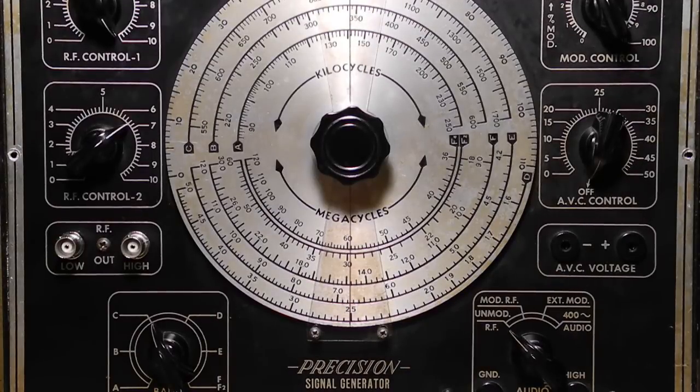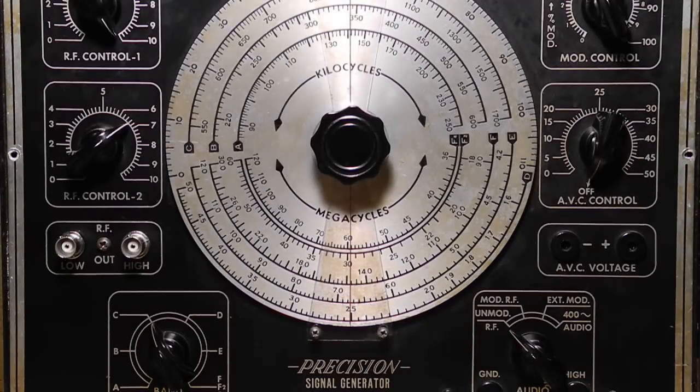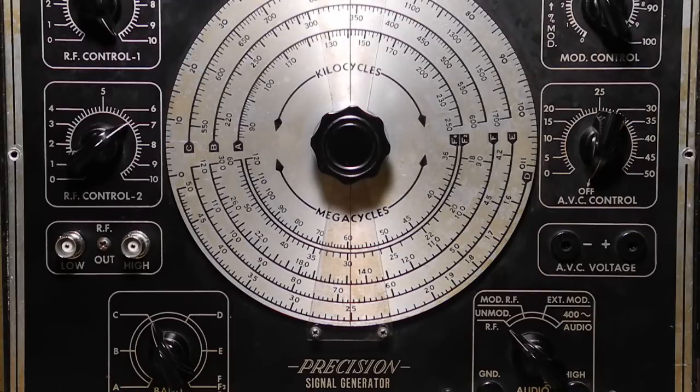It can generate radio frequencies in six ranges. Band A, 90 to 250 kHz. Band B, 220 to 600 kHz. Band C, 550 to 1700 kHz, the AM broadcast band.